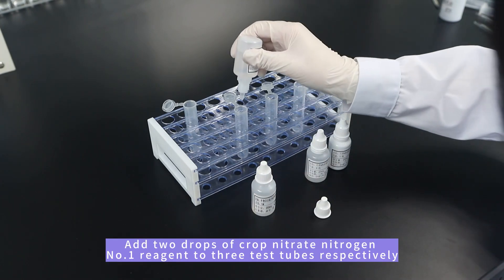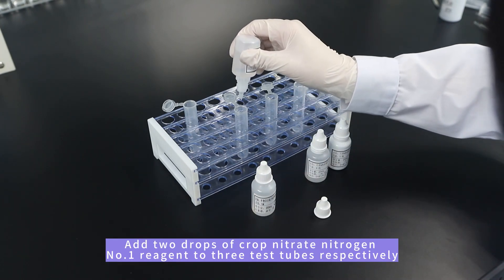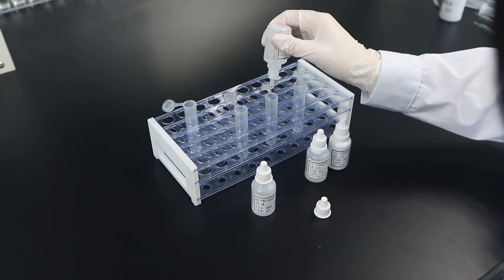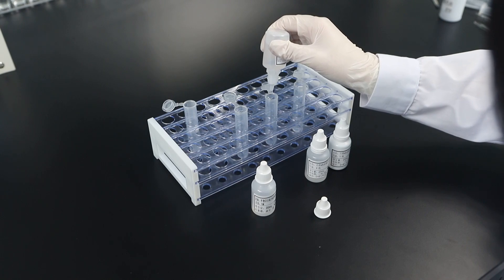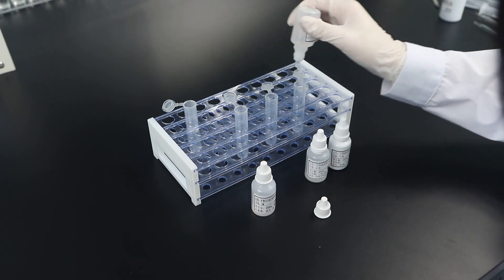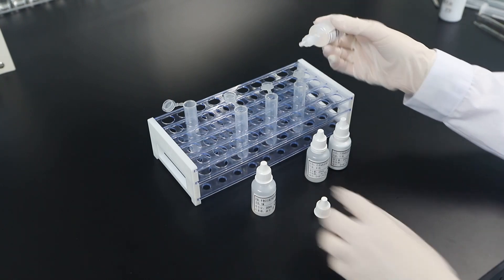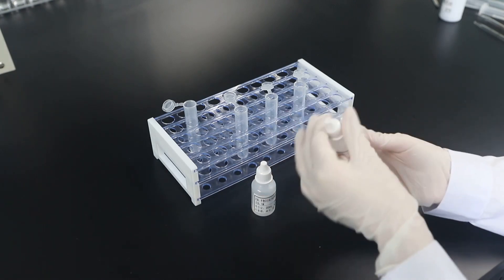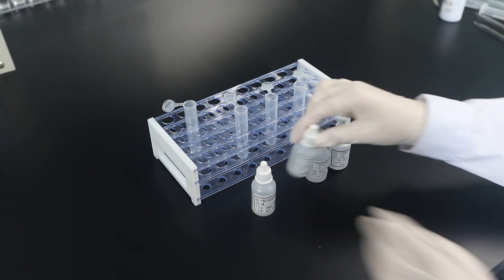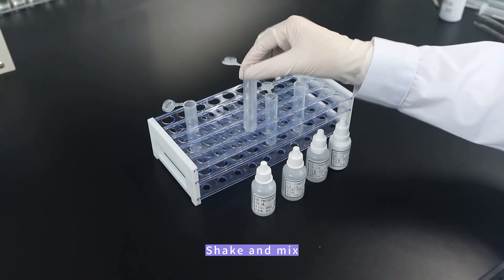Add 2 drops of crop nitrate nitrogen number 1 reagent to 3 test tubes respectively, then shake and mix.